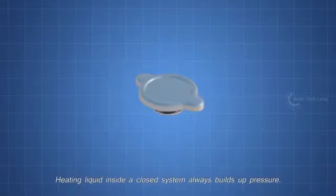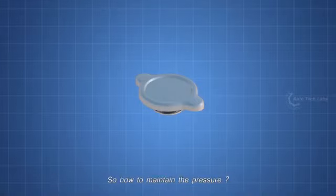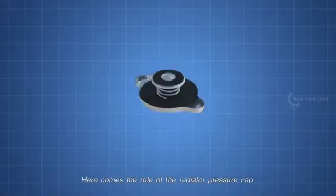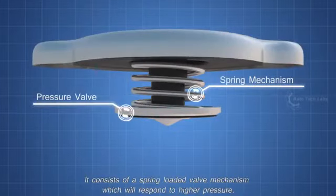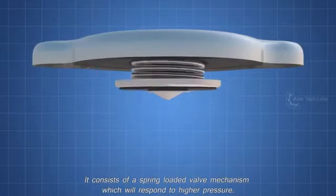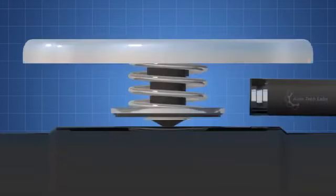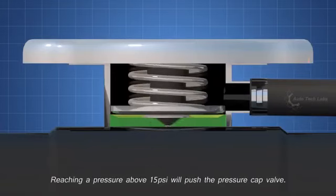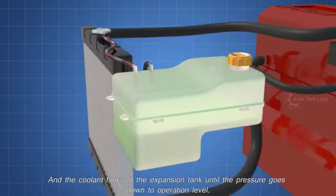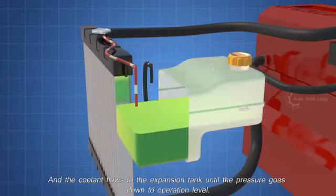Heating liquid inside a closed system always builds up pressure. So, how to maintain the pressure? Here comes the role of the radiator pressure cap. It consists of a spring-loaded valve mechanism which will respond to higher pressure. Reaching a pressure above 15 PSI will push the pressure cap valve, and the coolant flows to the expansion tank until the pressure goes down to operation level.